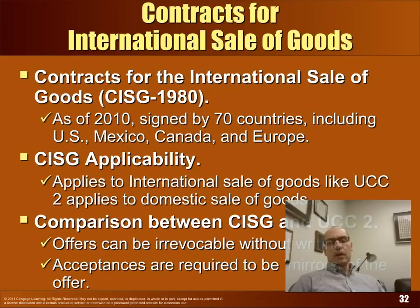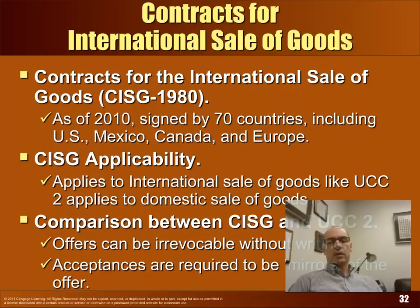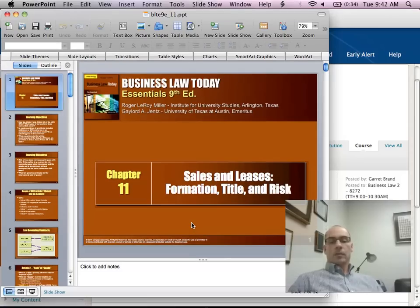Contracts for the International Sale of Goods, or CISG, is kind of the UCC at an international level. It applies to the international sale of goods like the UCC applies to the domestic sale of goods. There are a lot of similarities between the UCC and the CISG. One difference: under the CISG there could be an irrevocable offer without a writing, and the acceptance is required to mirror the offer.